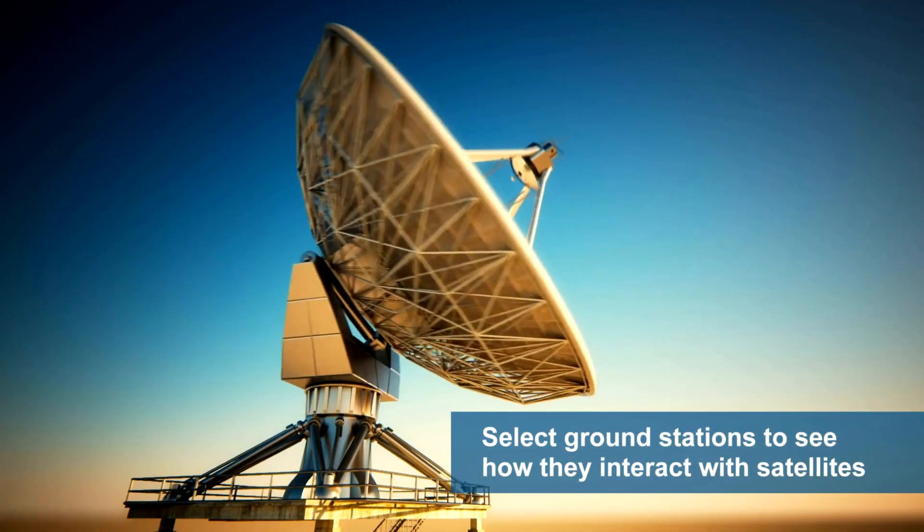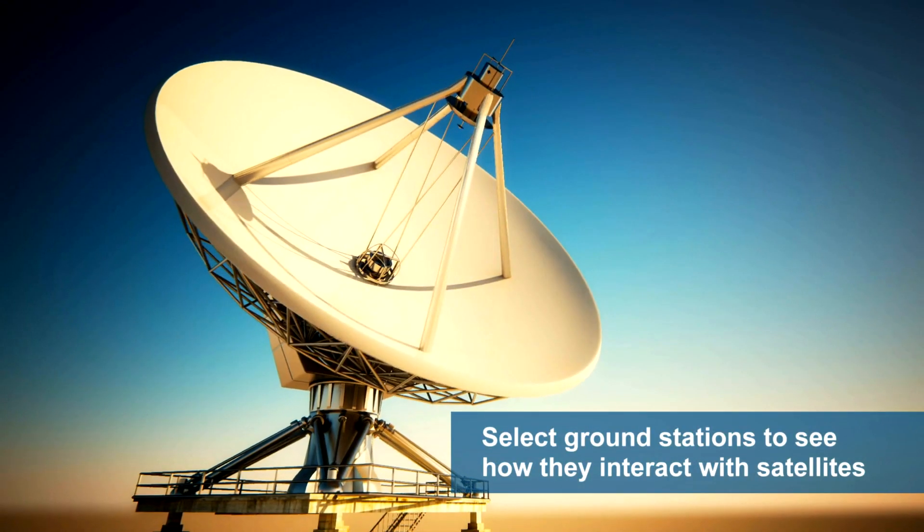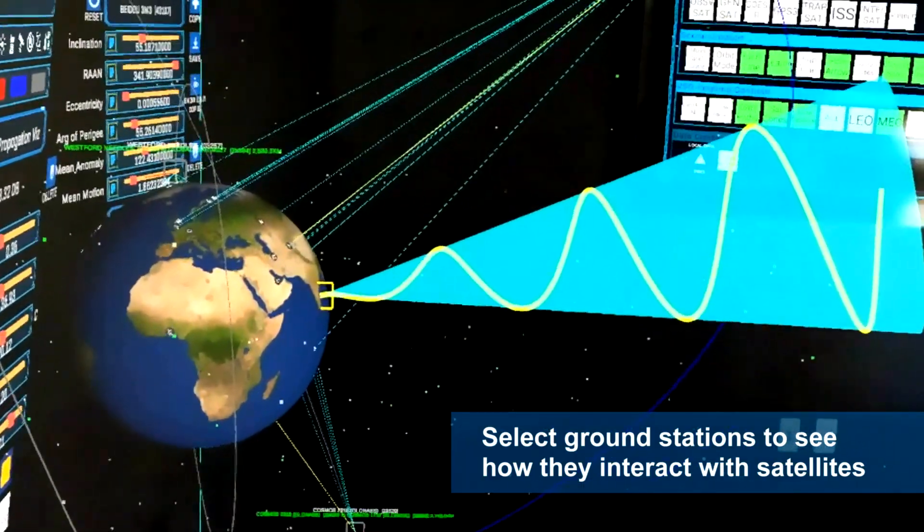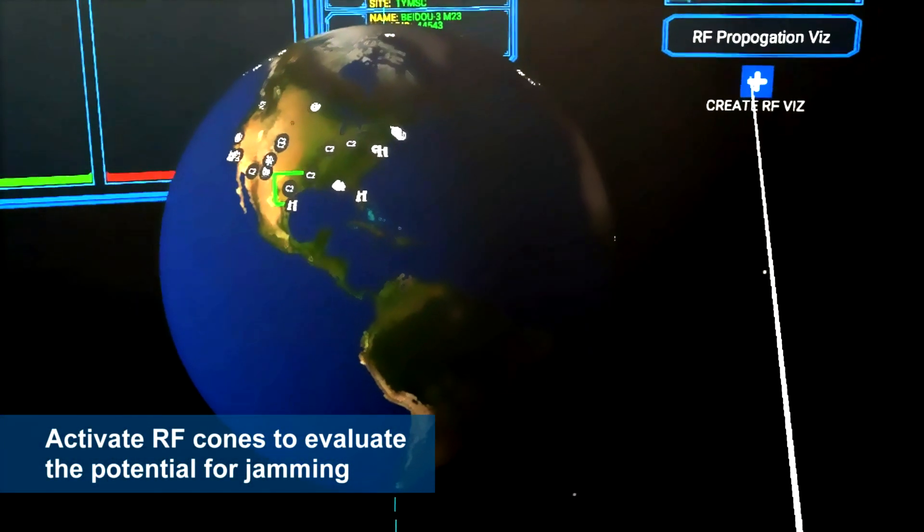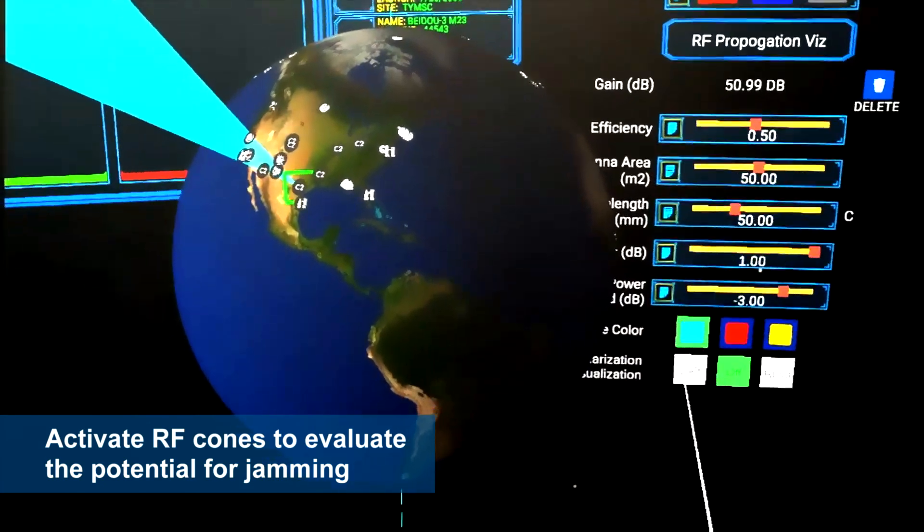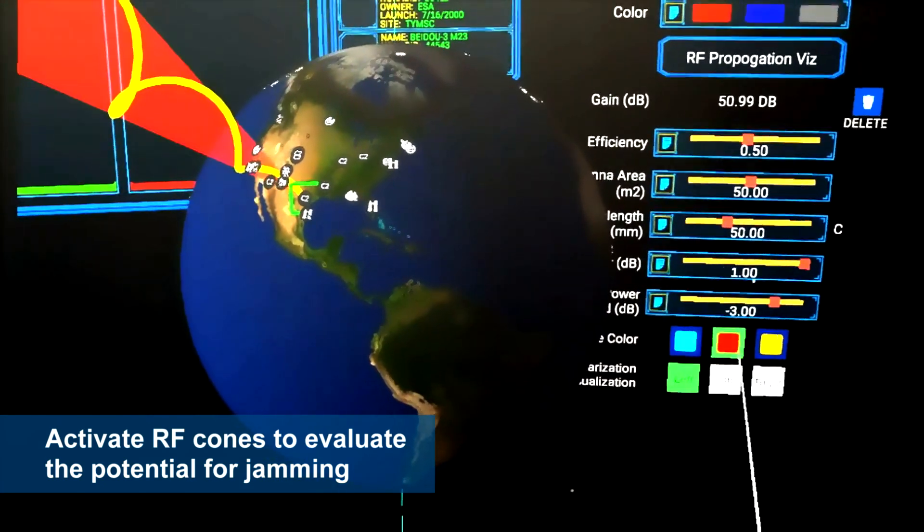Use the intuitive controls to select ground stations on Earth and see how they interact with satellites. You can activate and adjust radio frequency cones to evaluate the potential for jamming of passing objects.